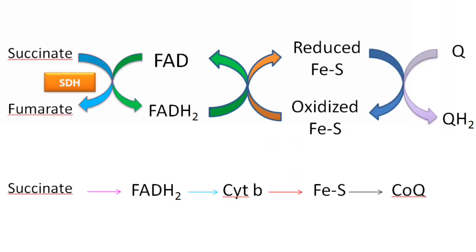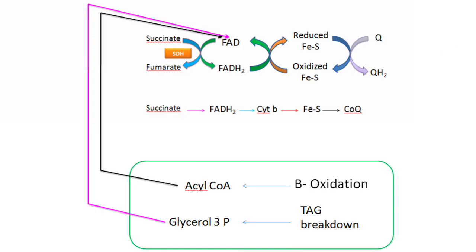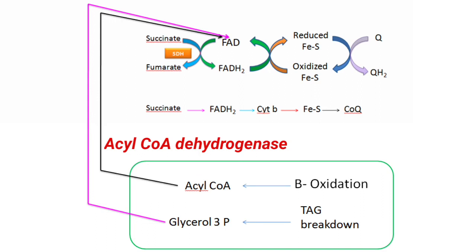The electrons from FADH2 are transferred to ubiquinone, and after receiving the electrons, ubiquinone is reduced to ubiquinol. Three major enzymes that transfer electrons directly to ubiquinol from FADH2 are: mitochondrial glycerol-3-phosphate dehydrogenase, involved in the breakdown of triacylglycerol; acyl-CoA dehydrogenase, the enzyme of beta-oxidation; and succinate dehydrogenase.